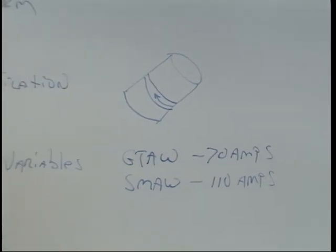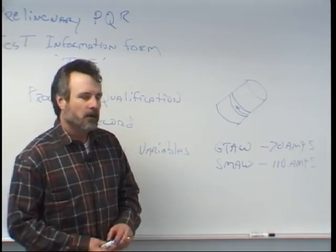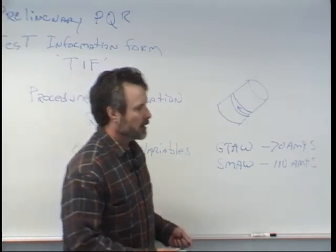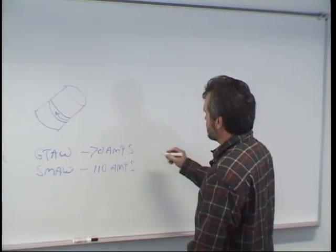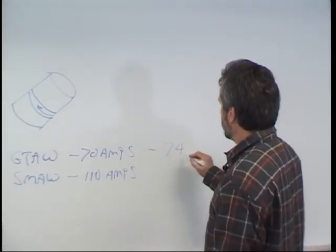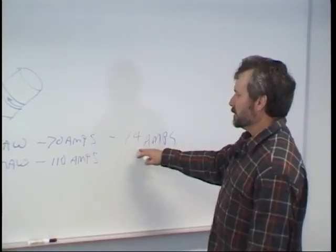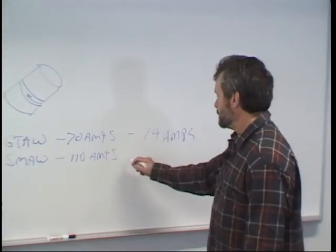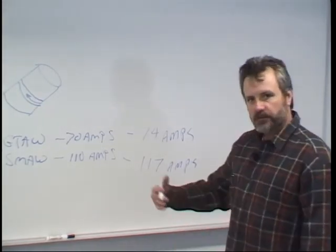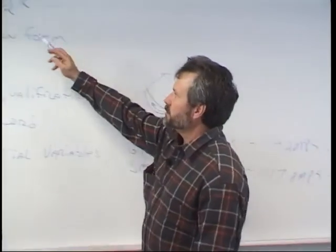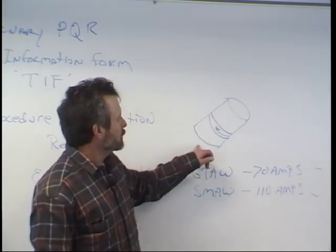As you're actually making the weldment, we have to record what actually happens. I might say I want you to weld at 70 amps, but we're going to look at the machine and use a meter to actually record it. If I told you to do it at 70 amps but when I check your machine you're actually running at 74 amps, I have to record exactly how many amps you were using on the test information form. Likewise, if I said 110 amps and it's really running at 117 amps, that has to be recorded. A procedure qualification record records the actual variables that were used in welding the test specimen.